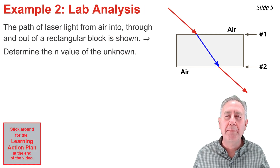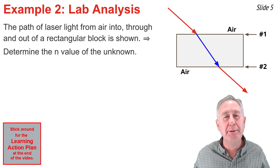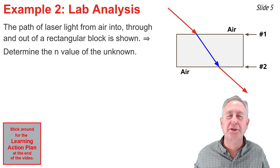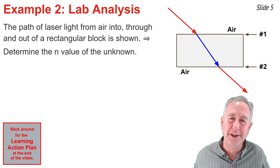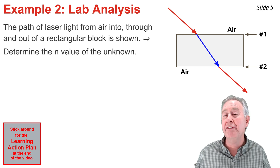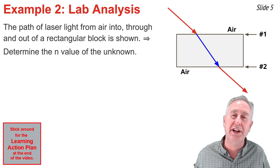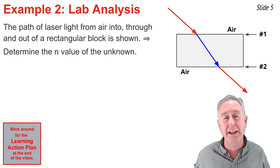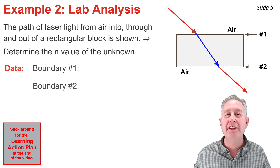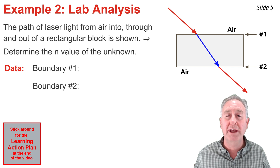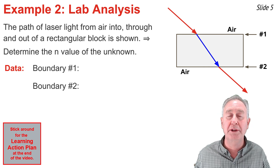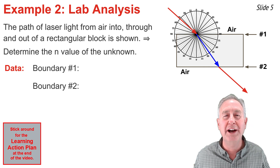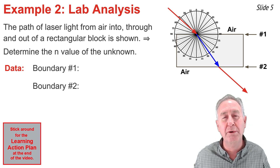The second of four example problems centers around the analysis of a lab commonly performed in a first-year physics course. In the lab, laser light is used to determine the index of refraction of an unknown material. The light is shined from air into a block of the unknown material and out the other side, and measurements must be made to determine the n-value of the unknown. The analysis begins by collecting measurements for the angle of incidence and angle of refraction at the two boundaries.